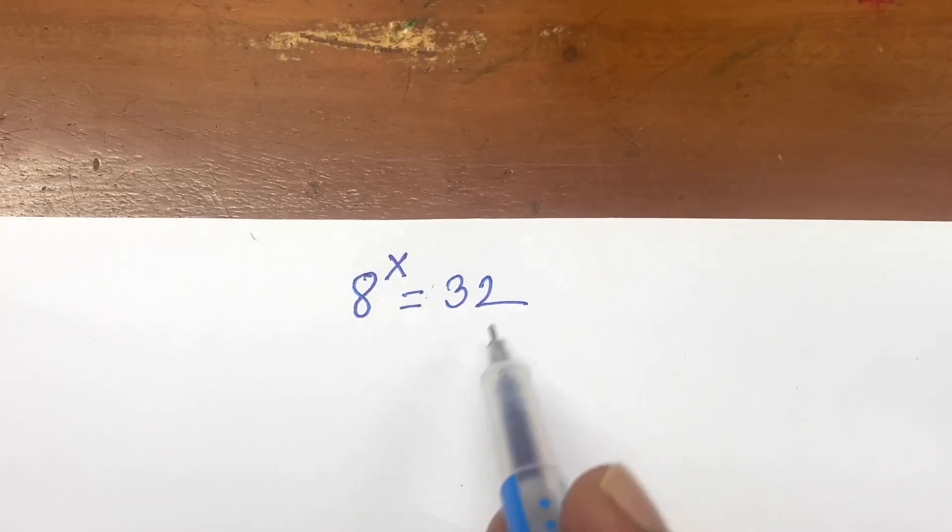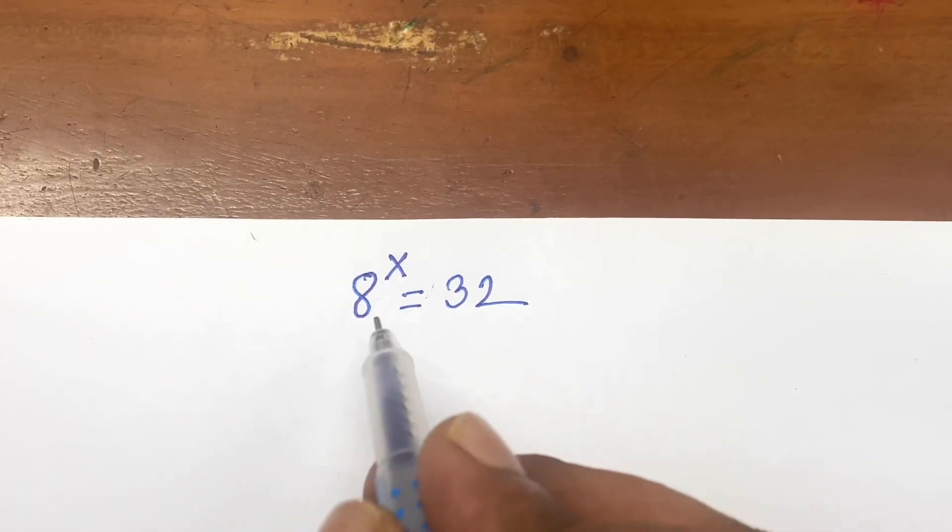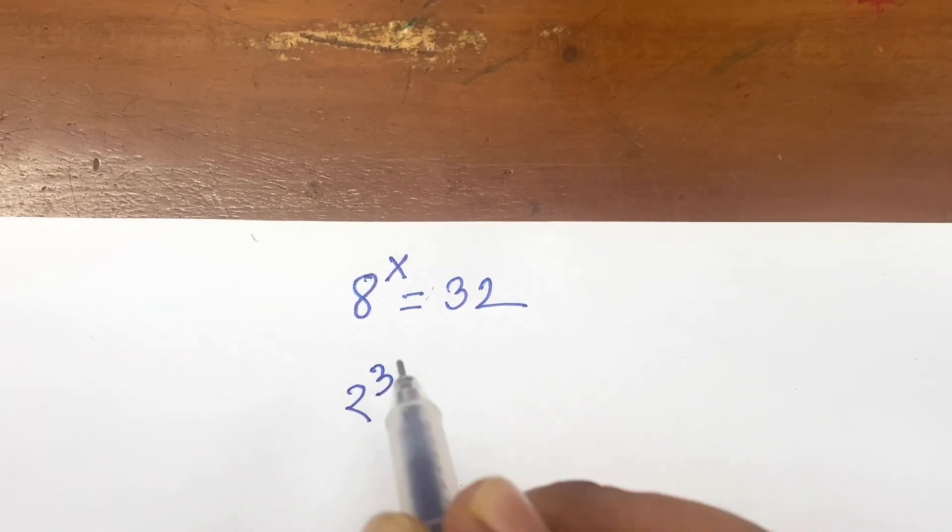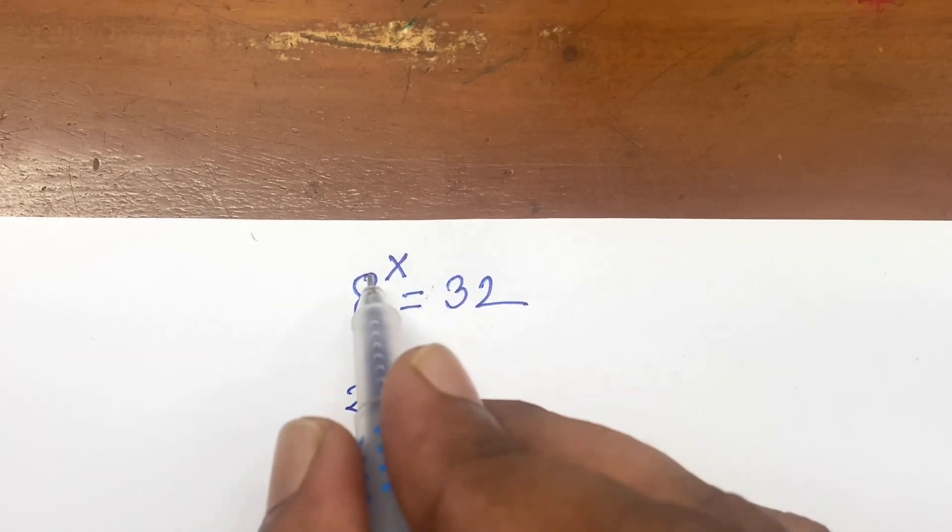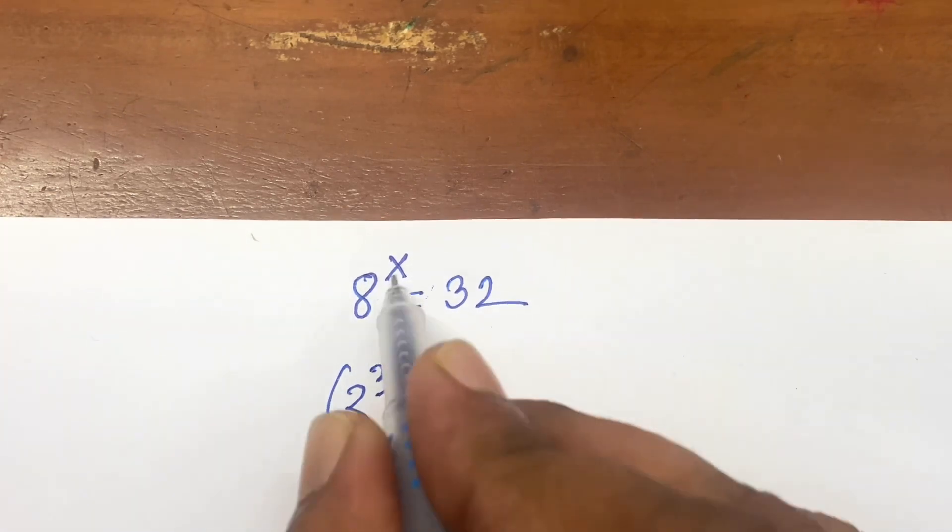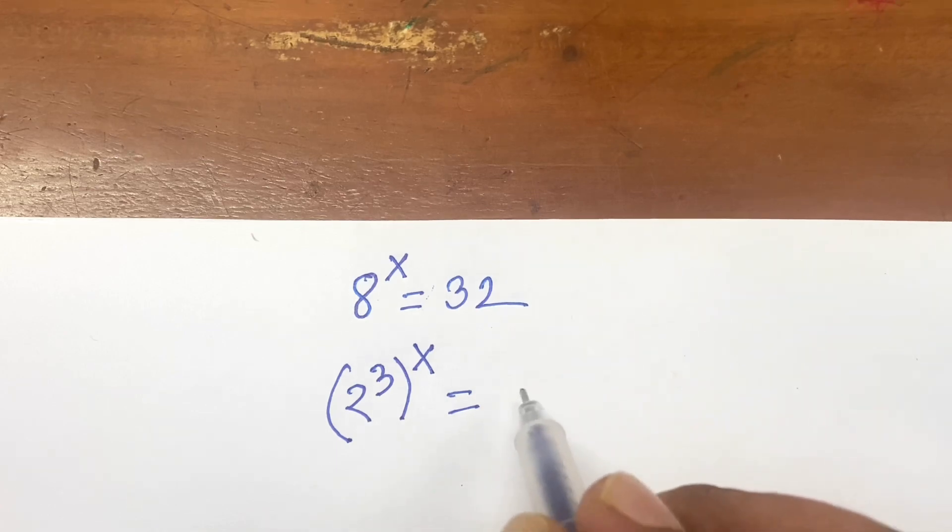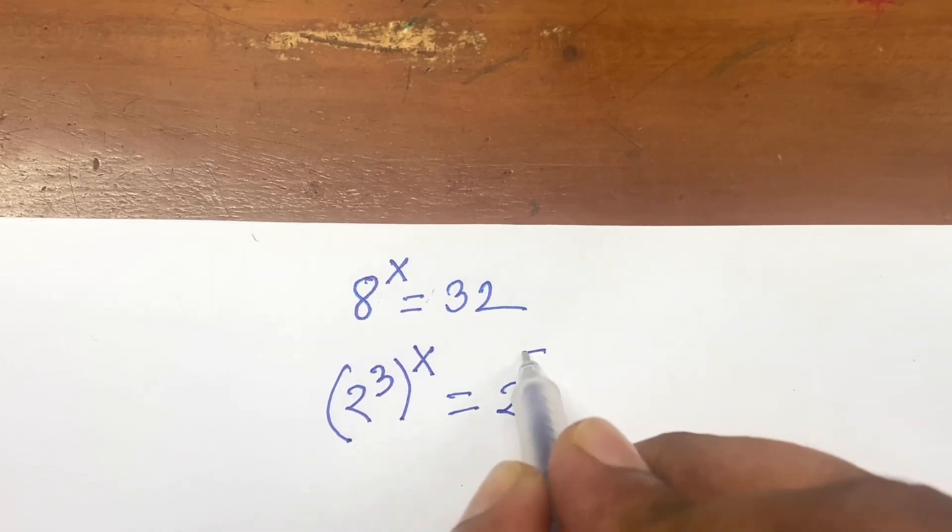How to solve 8 power x is equal to 32? This equation becomes 2 to the power 3. 2 to the power 3 is equal to 8, bracket power x, is equal to 32 like as 2 to the power 5.